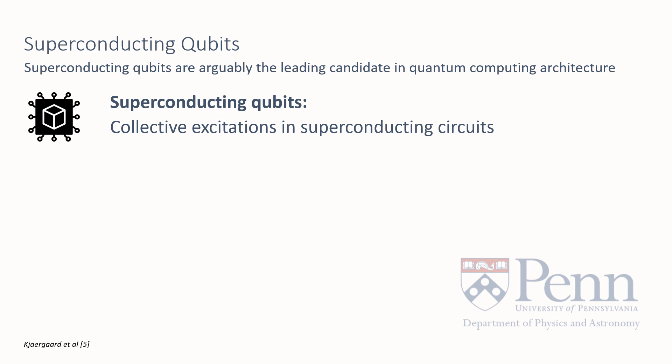Superconducting qubits are defined as collective excitations in superconducting circuits. These superconducting qubits are arguably the leading candidate in quantum computation architecture. For scalable quantum computing, we look to satisfy Di Vincenzo's criteria — specifically, we want sufficient control over a well-defined qubit and low noise. Superconducting qubits are indeed well-defined and lead the way as an approach that realizes quantum logic elements and coherent interaction in a highly controlled and low noise way.